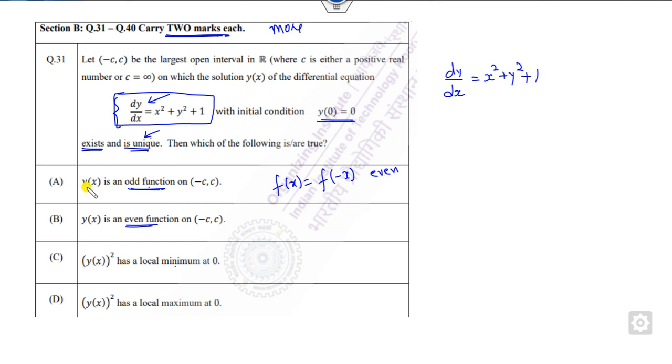In order to show whether y is even or odd, look about this function. Is this even or odd? You can easily see when you replace x with minus x, y with minus y, the function remains the same. It means this right-hand side is even. So since this is even, it means dy/dx is also an even function.